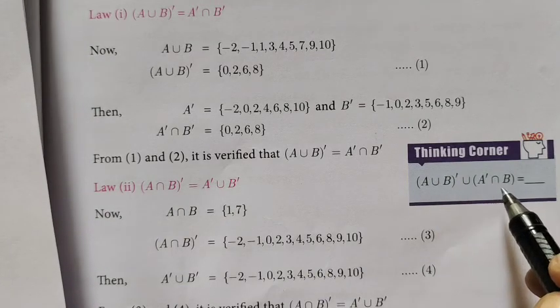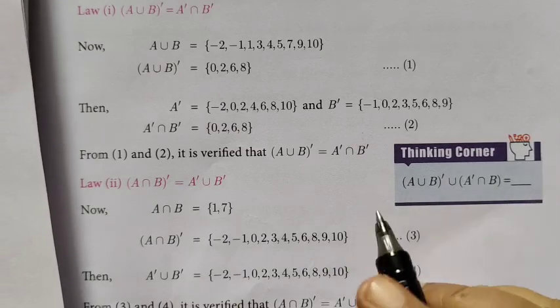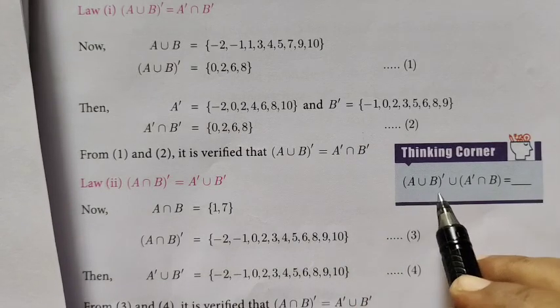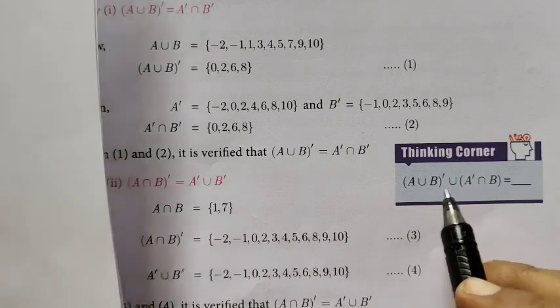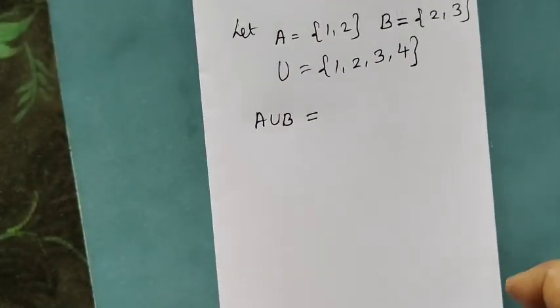Thinking corner: A union B whole dash union A dash intersection B potentially. A union B whole dash union A dash intersection B is changed. We changed the union, so for that we take one example.